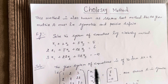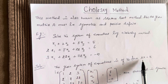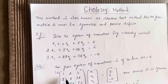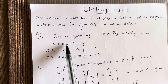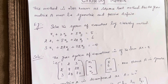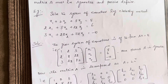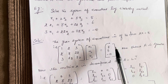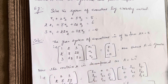The given system of equations is of the form AX equal to B, where A is the coefficient matrix. The coefficient matrix A is: 1, 2, 3 / 2, 8, 22 / 3, 22, 82. The matrix X is x1, x2, x3, which we need to find. And B is going to be 5, 6, minus 10.